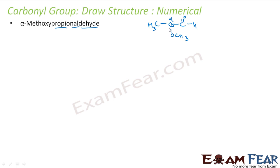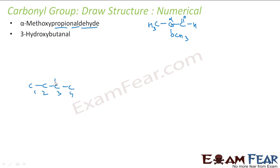The next is 3-hydroxybutanal. Let's draw but first: 1, 2, 3, 4 — that's butane. Let me number it: 1, 2, 3, 4. At 3, I have a hydroxy group — put OH. It's butanal — that means at 1, I have CHO. This is the structure. The other hydrogens you can just add.